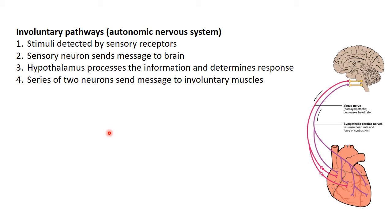Let's look at our involuntary pathways — here we're thinking about our autonomic nervous system. There are again four steps, and the process is almost identical with a few differences. The stimulus is detected by sensory receptors, then the sensory neuron sends a message to the brain — in this case the hypothalamus. The hypothalamus processes the information and determines the response. Remember, the hypothalamus is a gland and part of the nervous system, so it can send out both hormones and electrical impulses.